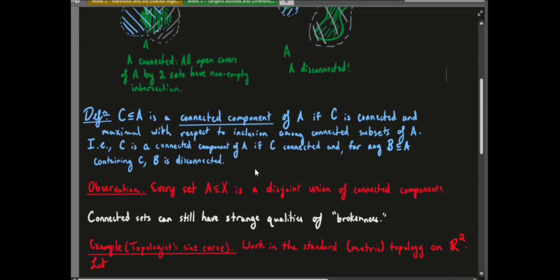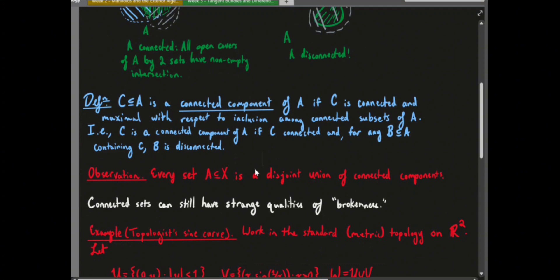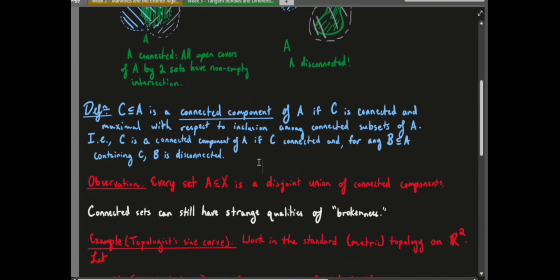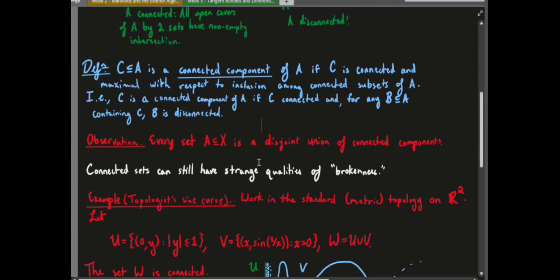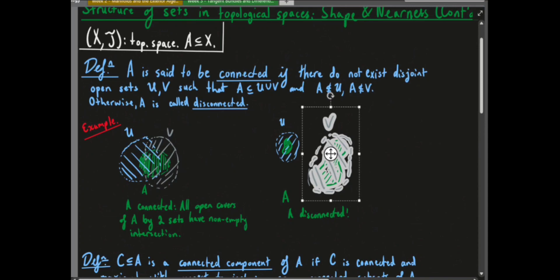If a set is connected, then we say it has one connected component — the whole set is that component. Otherwise, you can decompose a set uniquely into a certain number of connected components, whether finite, countably infinite, or uncountably infinite. Each connected component is the maximal connected subset of the set with respect to inclusion.